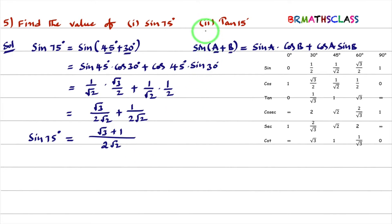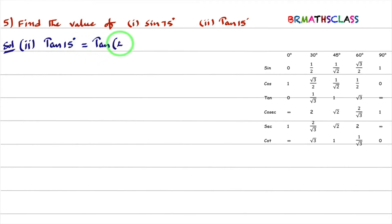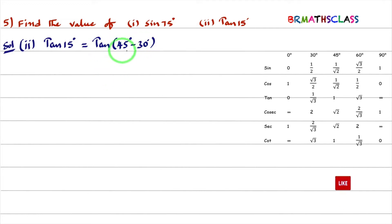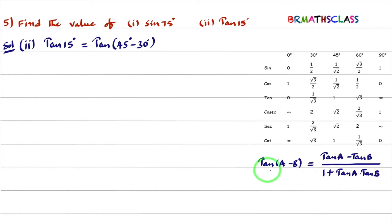Now the second part: find tan 15°. We can write 15° = 45° − 30°. If you observe, it is of the form tan(A − B).